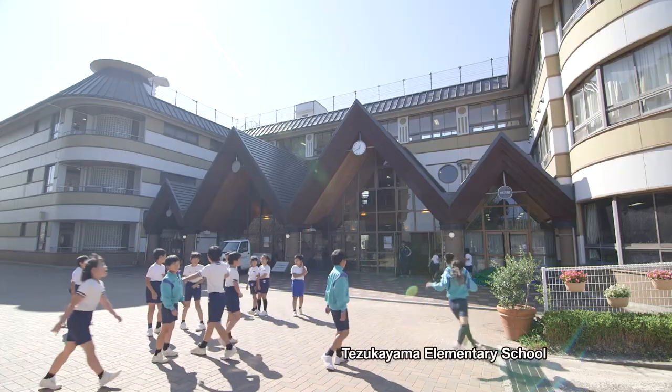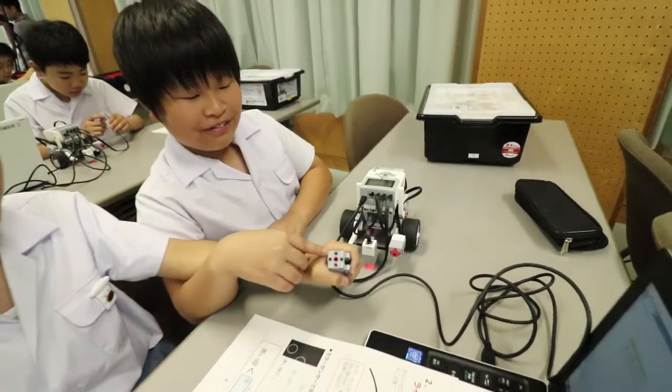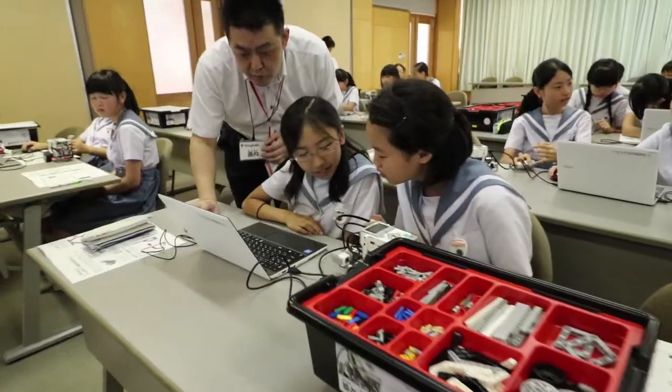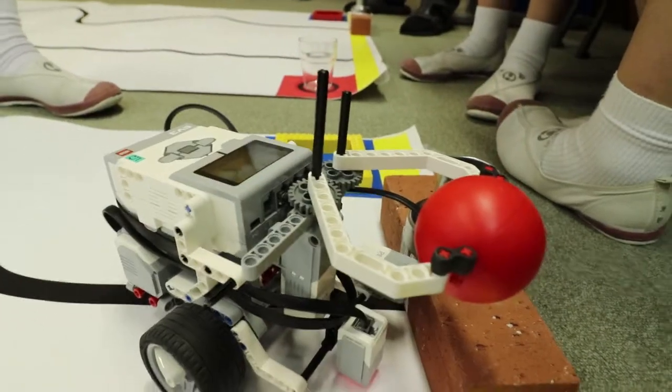Japanese children attend elementary school from ages 6 to 12. These 11 and 12 year olds are learning how to operate robots in a class designed to develop their creative thinking.